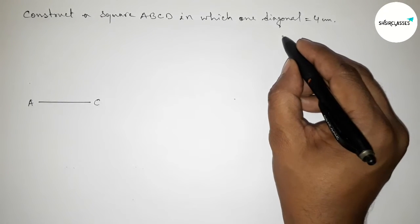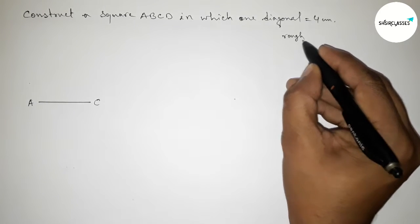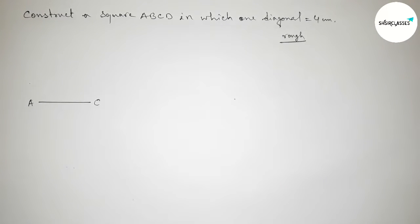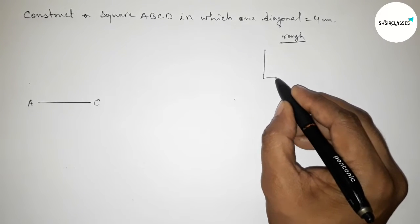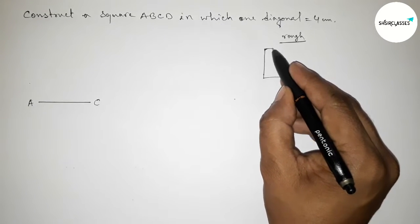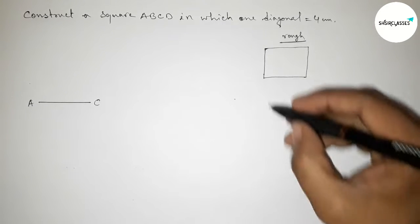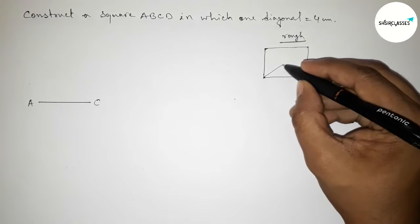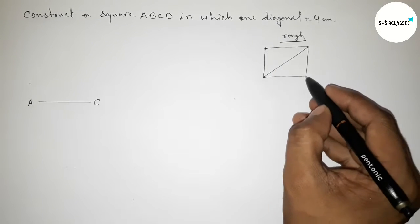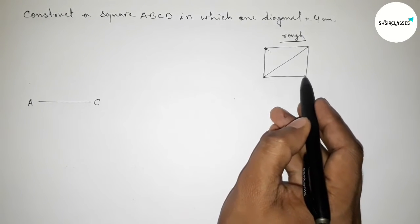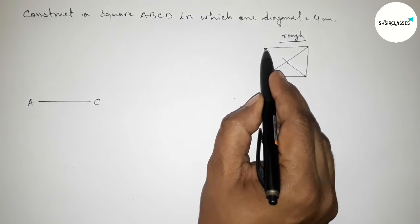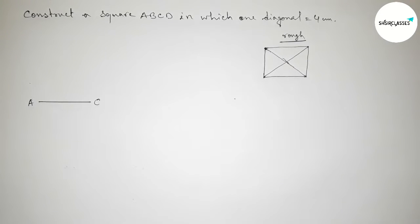Next, roughly discussing some important properties about the square here. First we have to draw here a square roughly. So first drawing here a square roughly by this way and joining this diagonal first, then joining this diagonal.